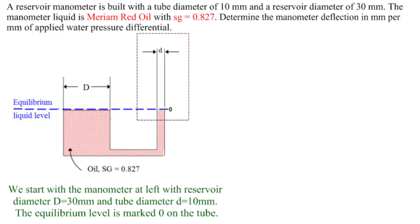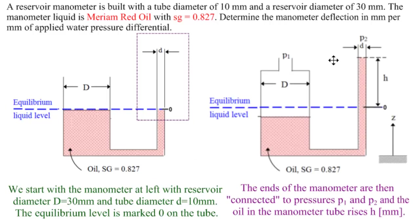What happens is we connect it up to two pressures here. In this case, the level of the oil rises h millimeters in the manometer, in the tube reservoir of the manometer. First of all, we can easily see that p1 must be bigger than p2 so that p1 presses down and the oil rises here. So that's the situation up to here.